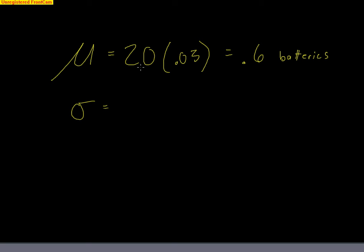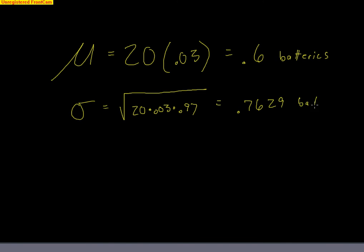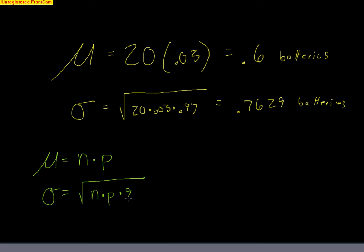Is that exactly how many are going to be defective? No — it could vary, so there's a standard deviation as well. The formula for standard deviation is the square root of n times p times q. So: the square root of 20 times 0.03 times 0.97, which is 0.7629. How do you find the mean in a binomial model? All you do is n times p. If you have n trials and p percent of them should be successful, just multiply. The standard deviation in a binomial setting is the square root of n times p times q — success rate times failure rate.